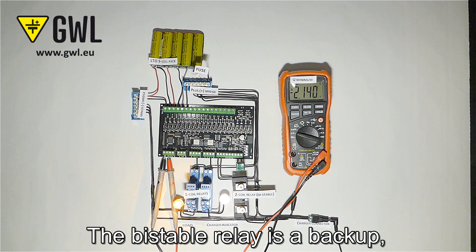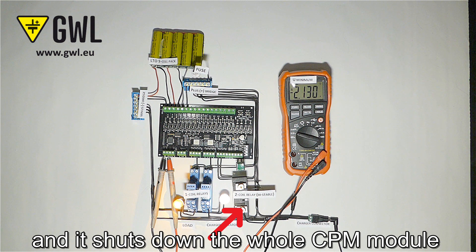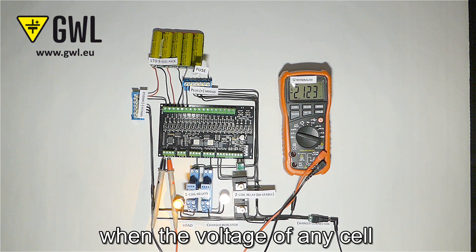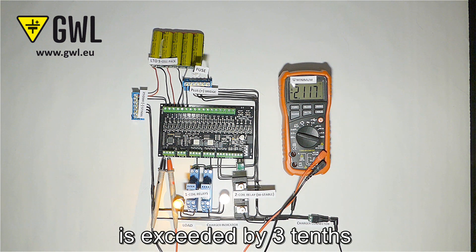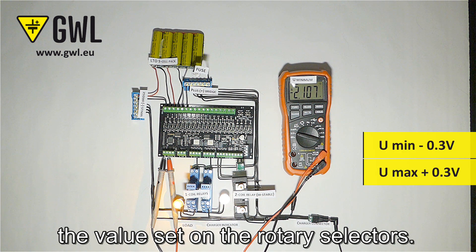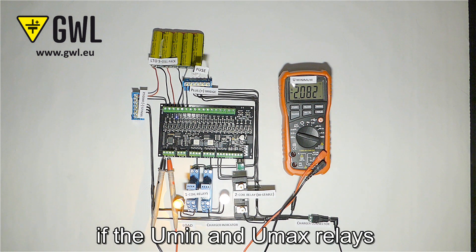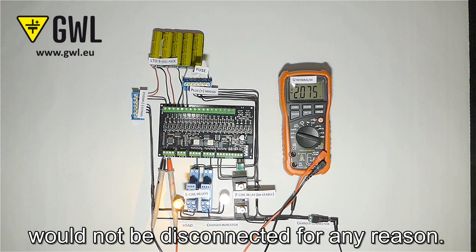The bistable relay is a backup, so called emergency, and it shuts down the whole CPM module when the voltage of any cell is exceeded by three tenths of a volt below or above the value set on the rotary selectors. It serves as a backup if the U-min and U-max relays would not be disconnected for any reason.